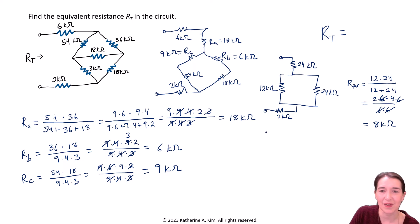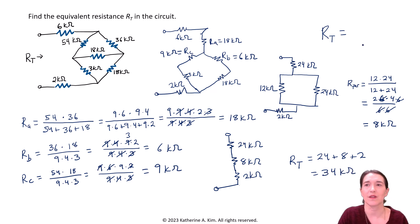So now we can redraw this. We have now 24 kilo ohms in series with 8 kilo ohms in series with 2 kilo ohms. So those are our two terminals. Now it's just series, so we just add them all together. So our full equivalent resistance will just be 24 plus 8 plus 2. And that is going to be equal to 34 kilo ohms. So let's write that as our answer. So our final answer, the final equivalent resistance for this circuit was 34 kilo ohms. That's our final answer.